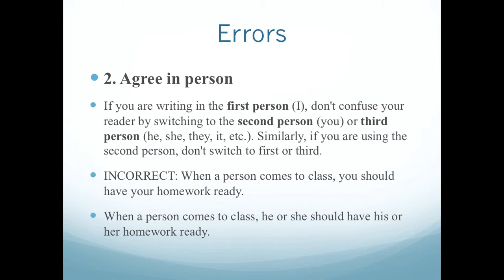The second rule is agree in person. If you are writing in the first person, don't confuse your reader by switching to the second person 'you' or third person 'he, she, it,' etc. Similarly, if you are using the second person, don't switch to first or third. For example: 'When a person comes to class, you should have your homework ready.' This is incorrect because it switches from third person to second person.